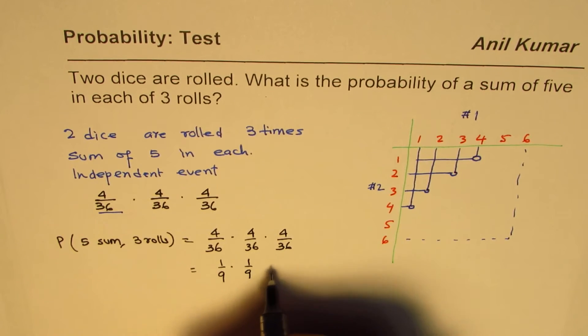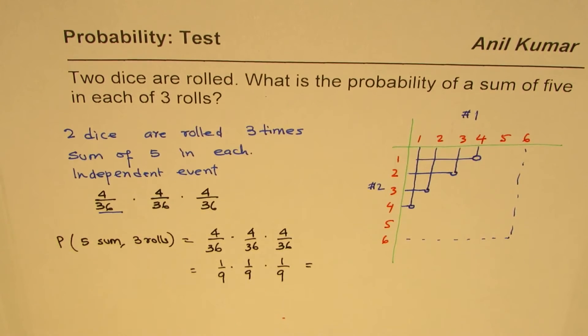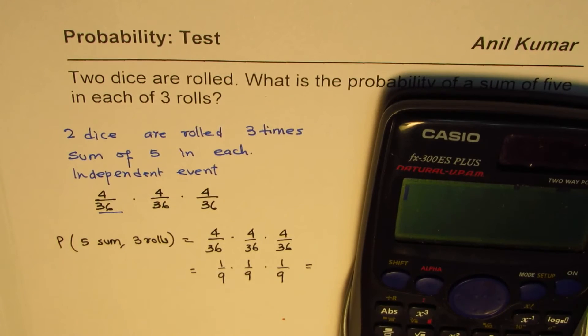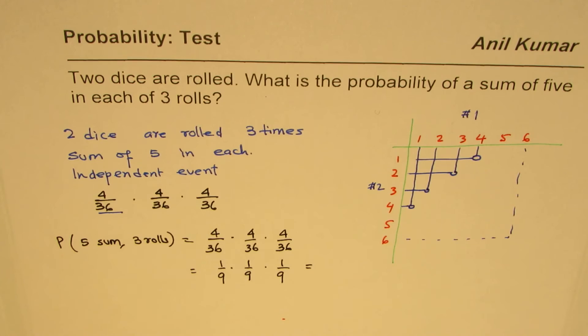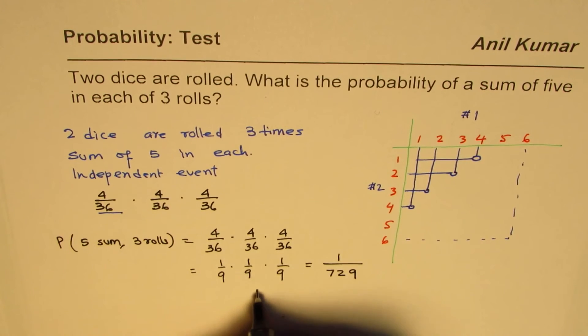And that is equal to, we can multiply 9 three times, or 9 cubed equals 729. So we get 1 over 729 as our answer. So our answer is 1 over 729.